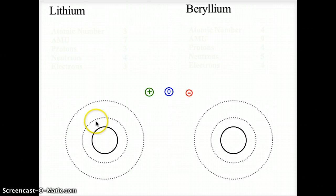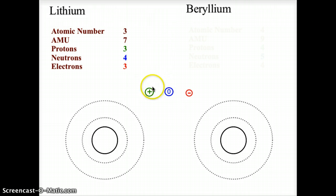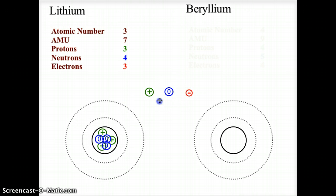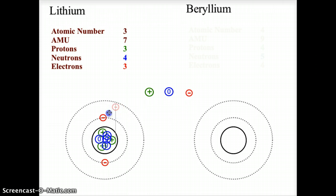Moving to the next level — lithium. Lithium is atomic number 3, so we have three protons. The mass is 7, so 7 minus 3 gives four neutrons; the nucleus is densely packed with protons and neutrons. We need three electrons for a neutral atom. The first orbit can only house two electrons, so the third electron ends up in the second orbital. There we have a lithium atom.